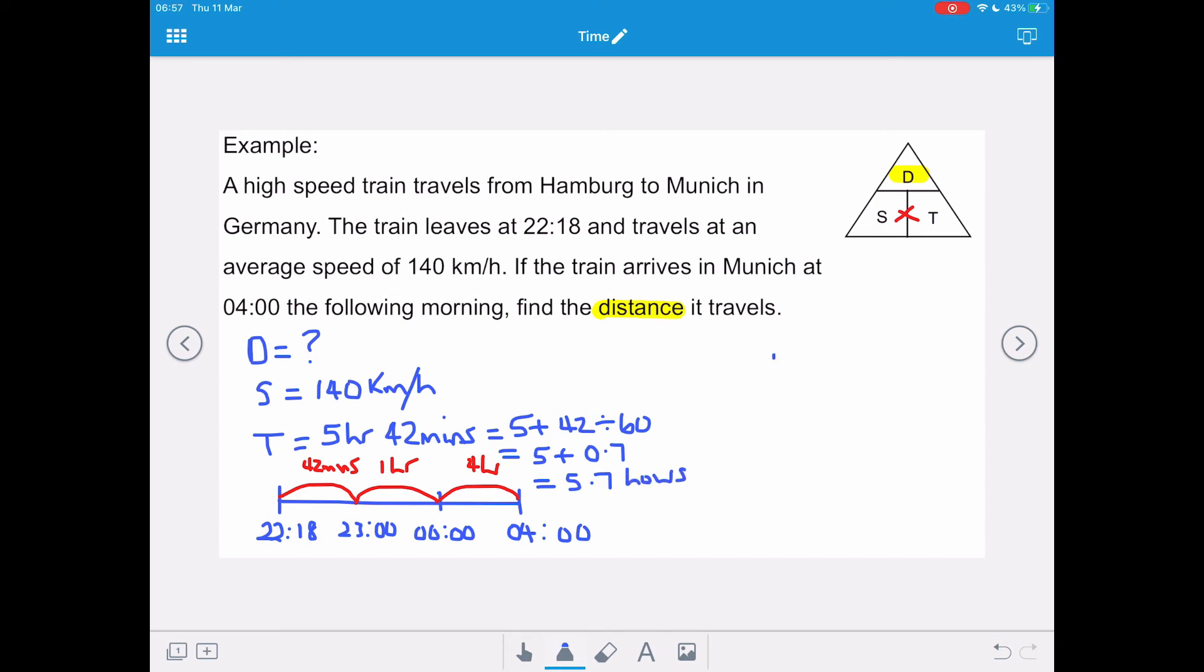Now we need to write our formula. We've got distance equals speed times time. And we substitute in 140 kilometers per hour as our speed, multiplied by 5.7 hours as our time. And that gives us a total of 798, and our unit of distance is kilometers for this question.